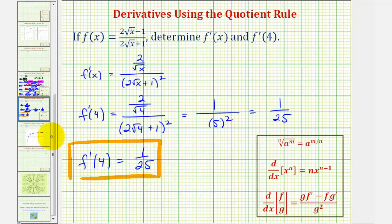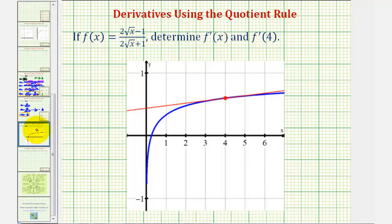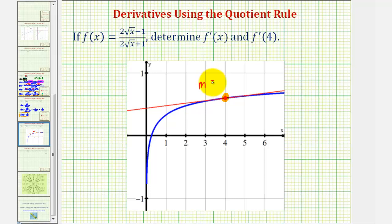Here's the graph of our function, and here's the point on the function when x equals four. Since f prime of four equals one twenty-fifth, the slope of this tangent line is one twenty-fifth. I hope you found this helpful.